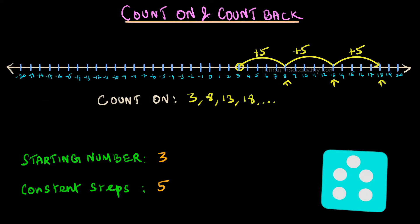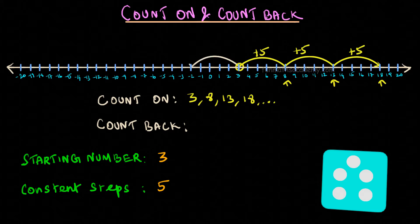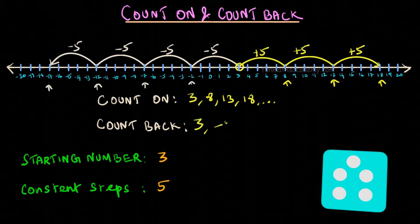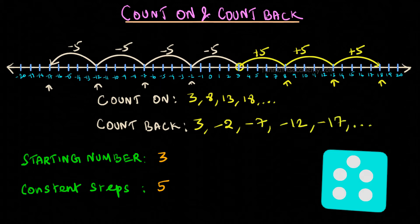To count back from 3, we are going to jump 5-5 steps behind and list the numbers. We get 3, minus 2, minus 7, minus 12, minus 17 and so on.